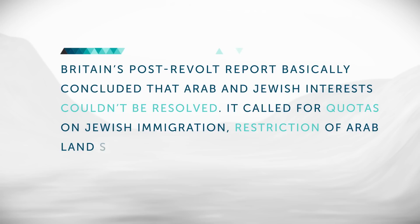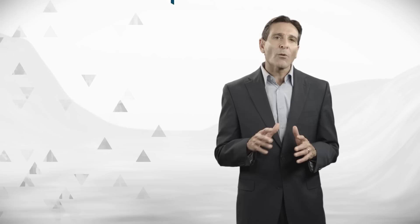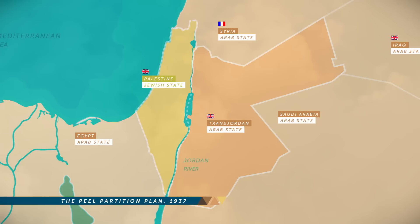Britain's post-revolt report basically concluded that Arab and Jewish interests couldn't be resolved. It called for quotas on Jewish immigration, restriction of Arab land sales to Jews, and the creation of an Arab agency. The report said the mandate should be terminated and what remained of Palestine must be separated into independent Arab and Jewish states. A second partition of Palestine was in the works.